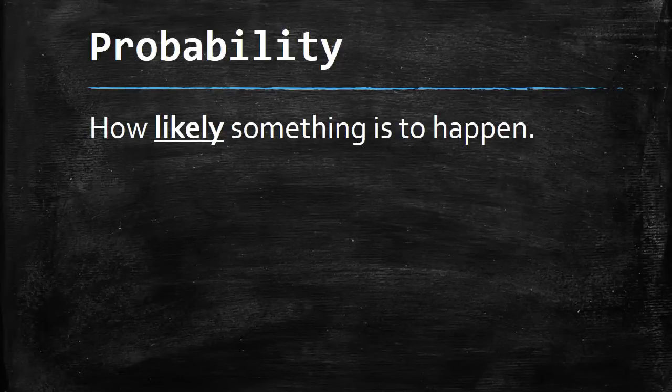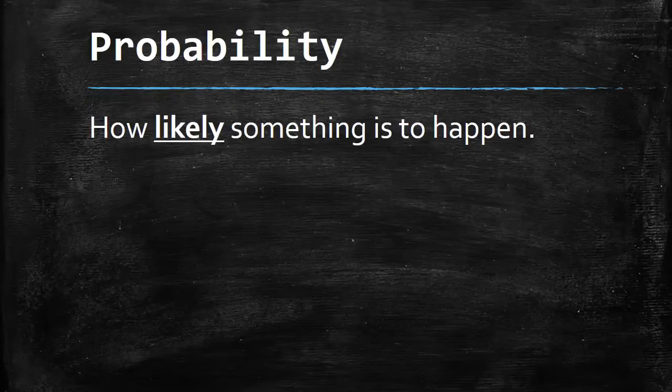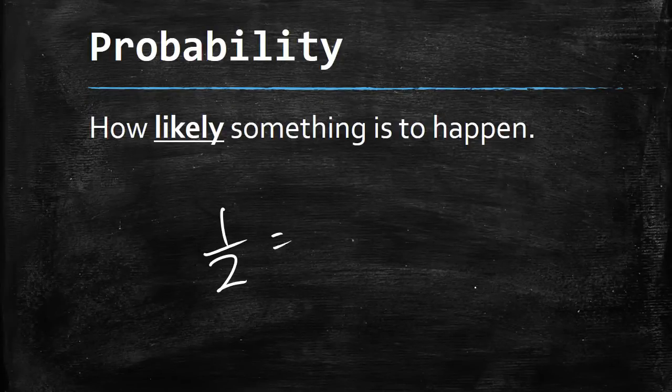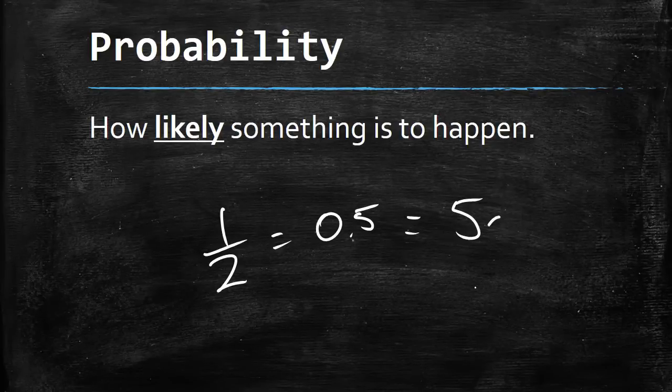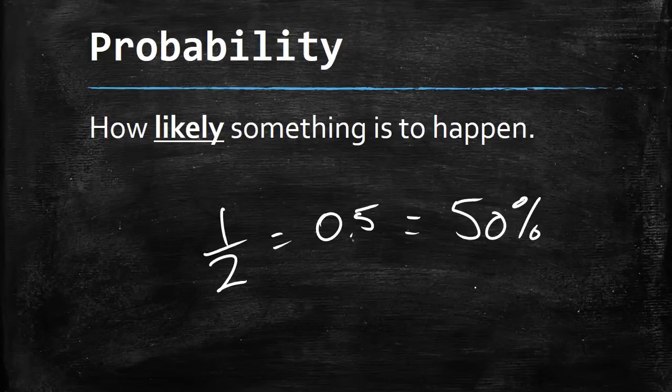We can measure probability in different ways. We can look at it as a fraction, like one half, or as a decimal, like 0.5. We can also put it as a percent - 0.5 is the same as 50%. There are a lot of different ways to write probabilities, but they all mean the same thing.